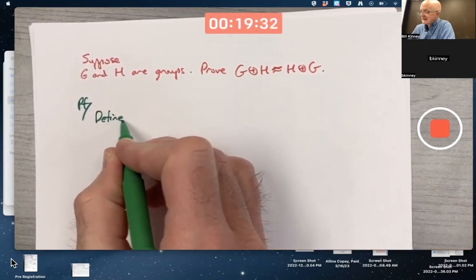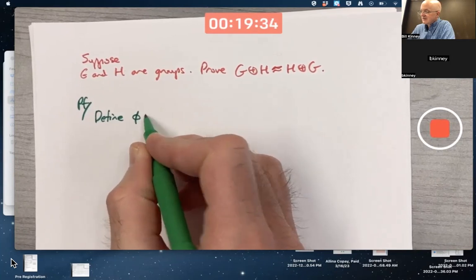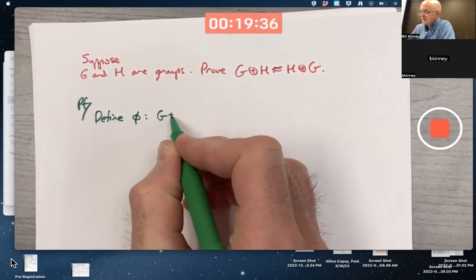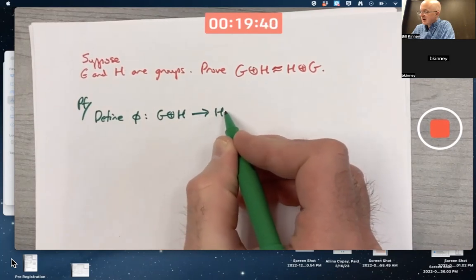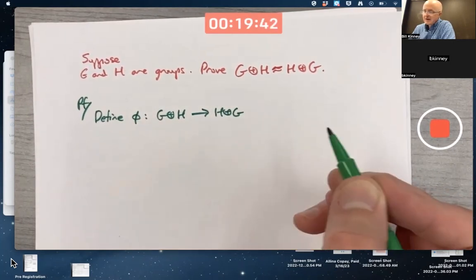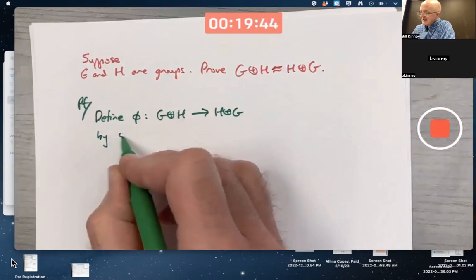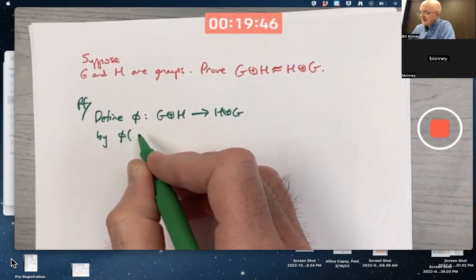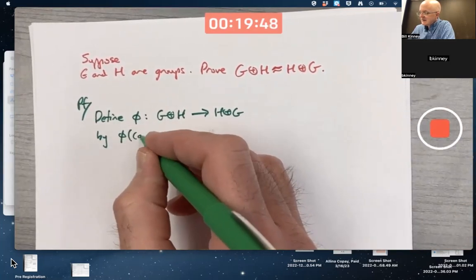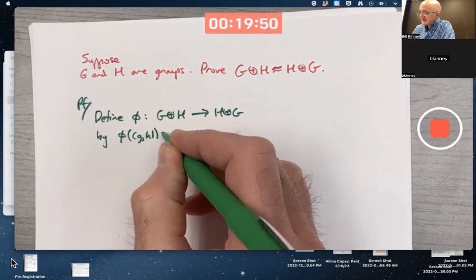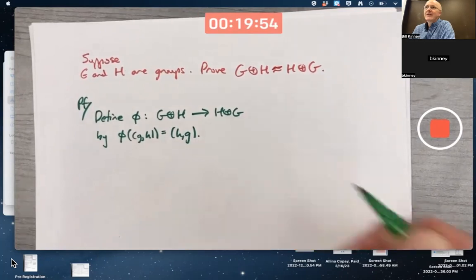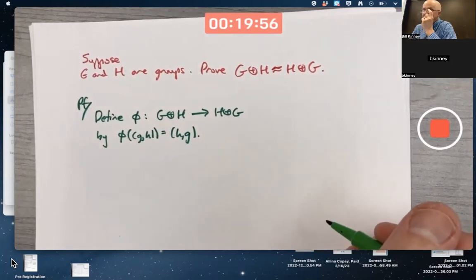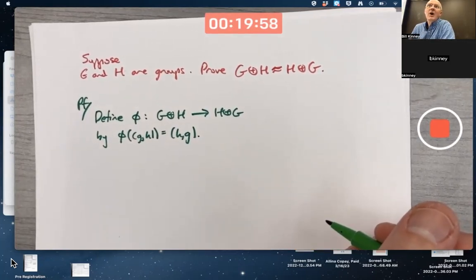Define a function phi from the external direct product with G and H to the external direct product of H with G. By what formula? How about phi of G comma H is H comma G? Only thing that kind of makes sense to even try, right? I hope you thought of that.